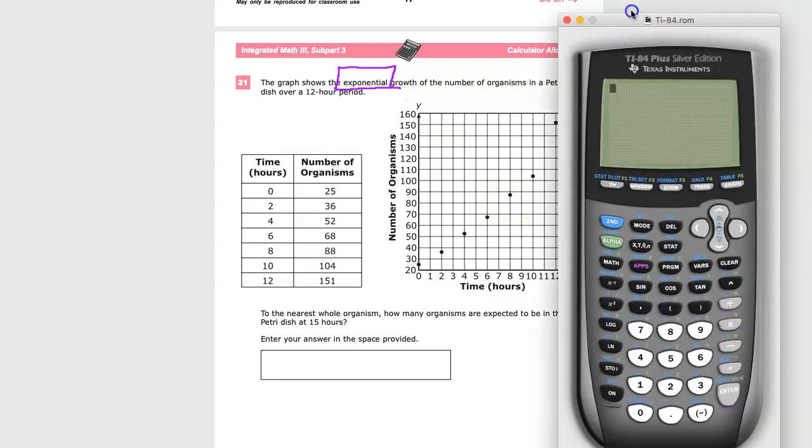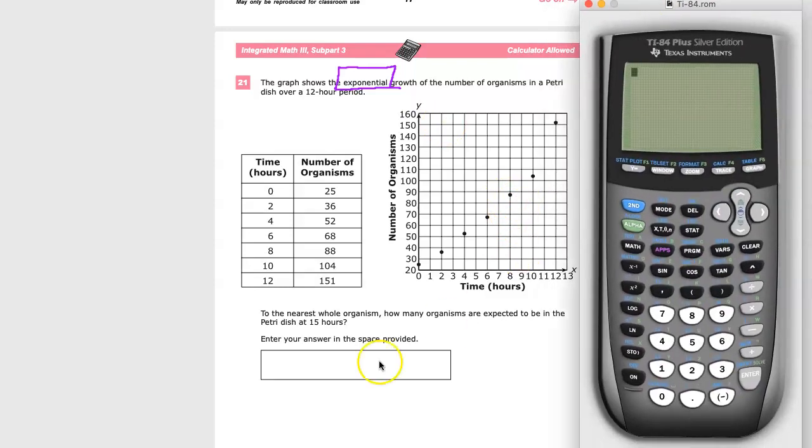If you don't have a calculator for this one, this is kind of a rough one just because of the answer type. If it had been multiple choice, you would have had some options, but it's in your best interest to have one. Hopefully, you'll have something available to you that will let you do it. I have the TI 84+, so we'll use that.